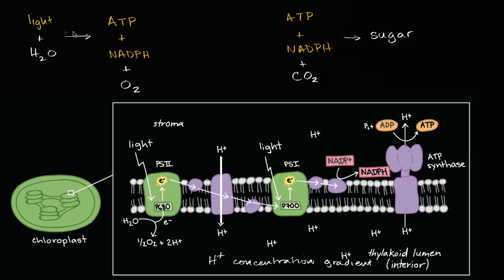So one way to think about it, this is producing a hydrogen ion gradient, we could say H+ gradient, which is then being used to produce the actual ATP.